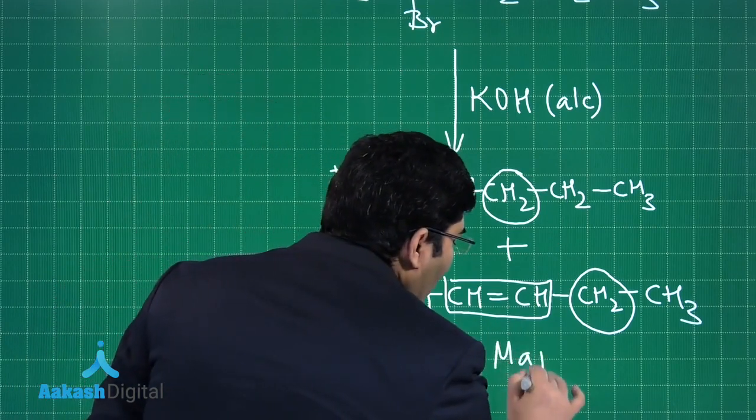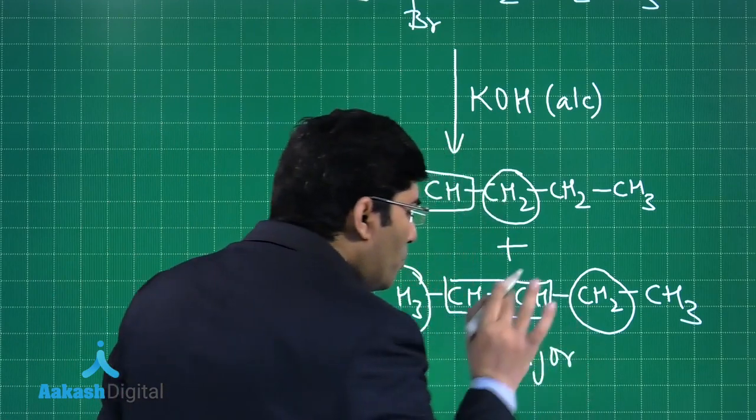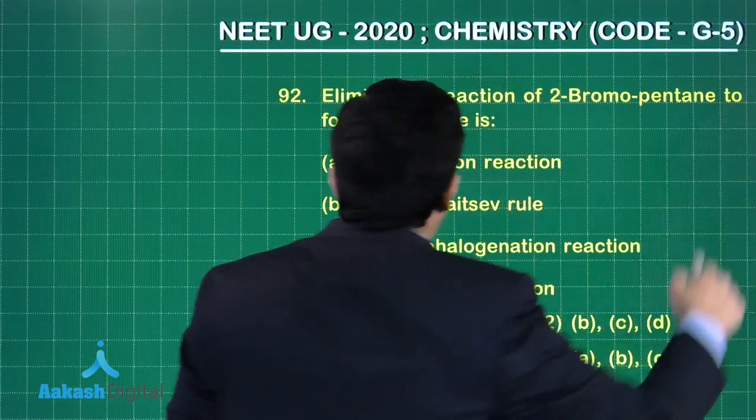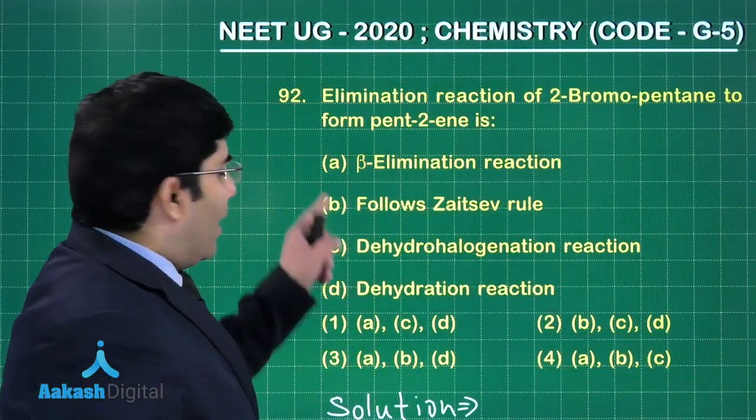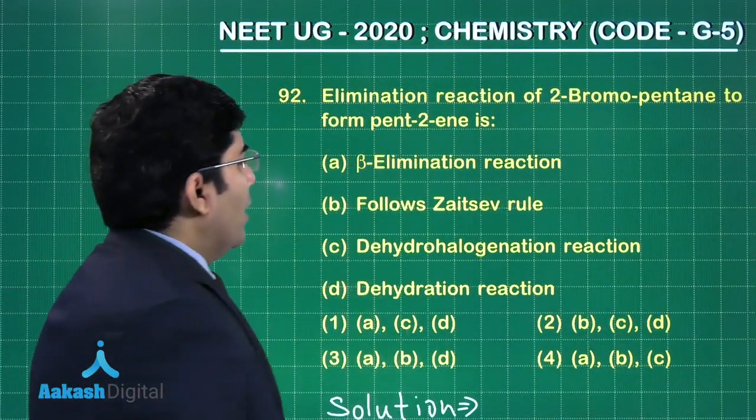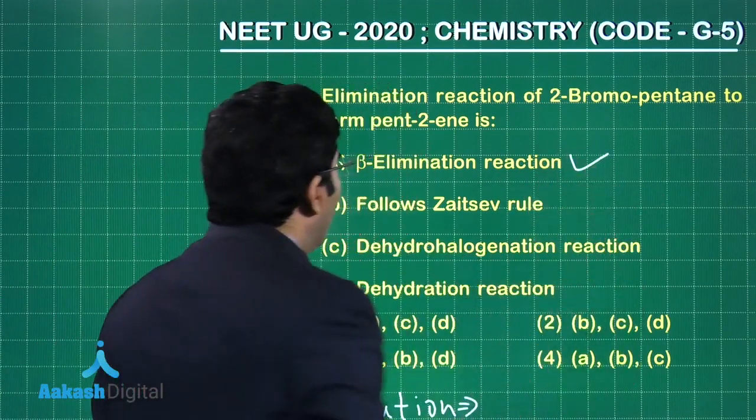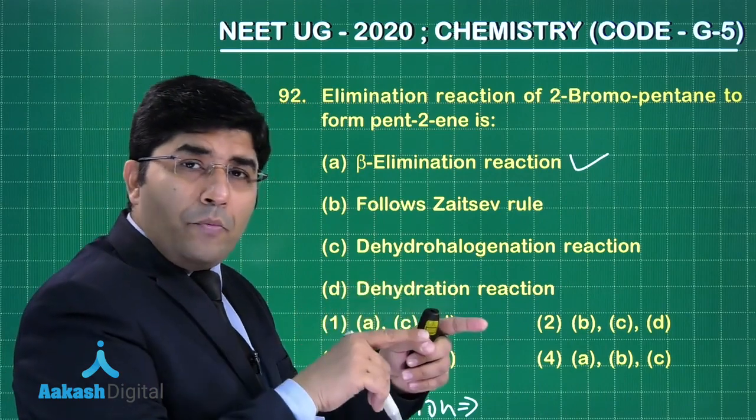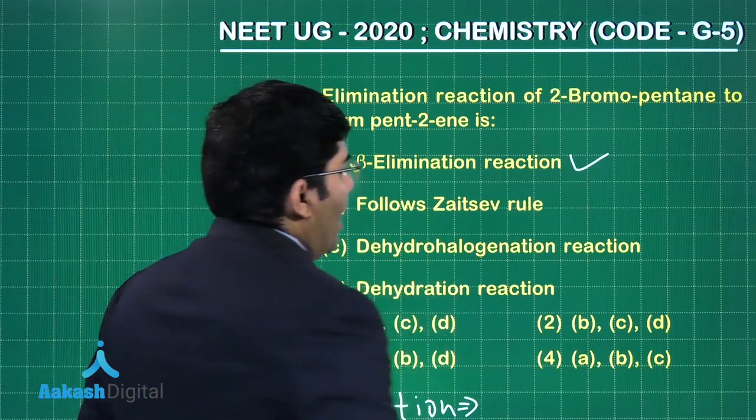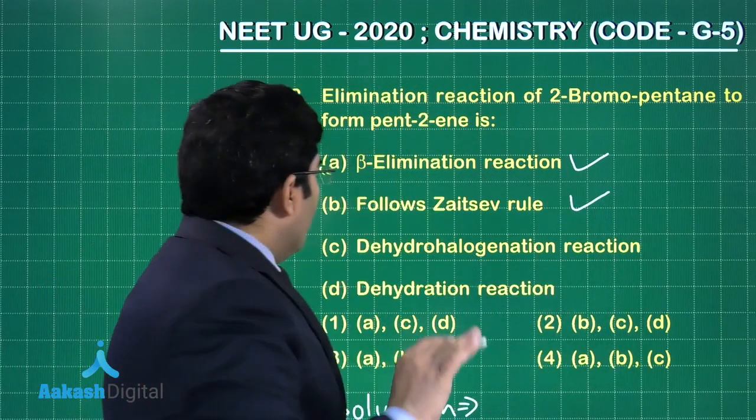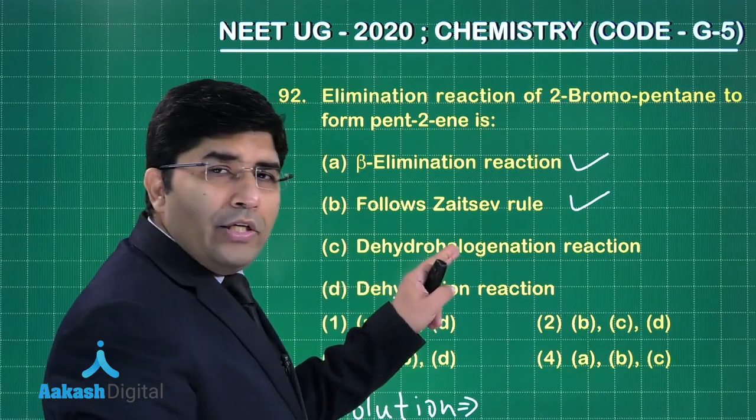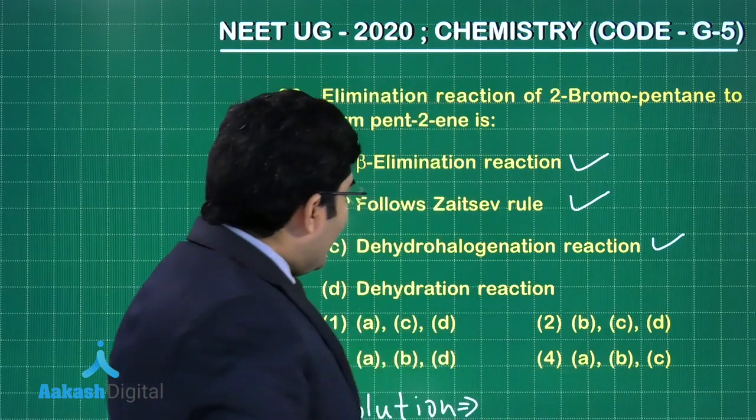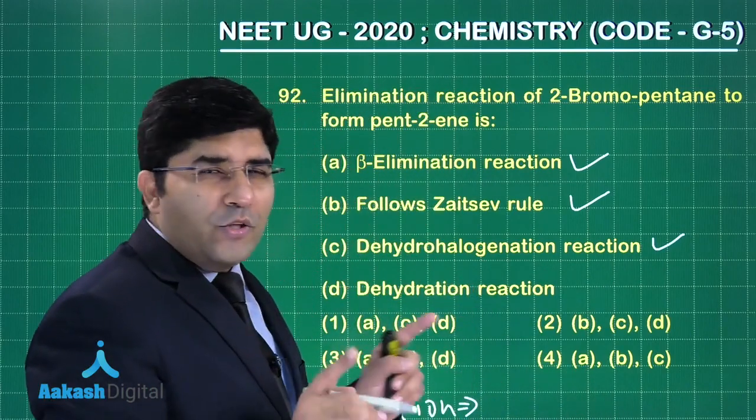If we look at the answers: (a) is it beta elimination? Yes, it is beta elimination. (b) Does it follow Zaitsev rule? Yes, because the major product is according to Zaitsev rule. (c) Is it dehydrohalogenation? Yes, HBr is going out, that's why it is dehydrohalogenation reaction. (d) Is it dehydration? No, this is not dehydration.